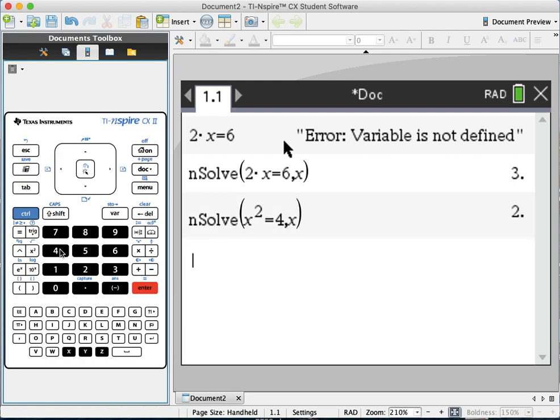It gives me a single solution, x equals 2, one solution only. Now I know that this equation has two solutions, 2 and minus 2.